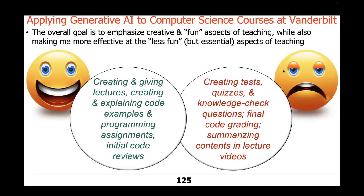My overall goal is to make my teaching, research, and day-to-day life more creative and fun, while making me more effective at things that aren't as fun but are essential. I like to create lectures, explain code, write programming assignments, and review students' code. But I don't like creating tests, quizzes, and knowledge check questions — I find that mundane. I'm using ChatGPT and generative AI to make those things less onerous, more fun, and actually more accurate in many ways.